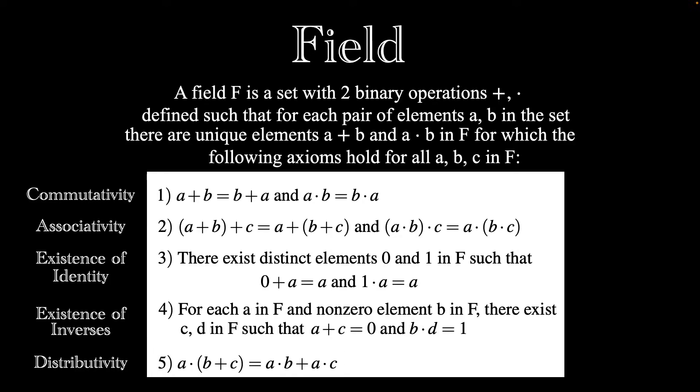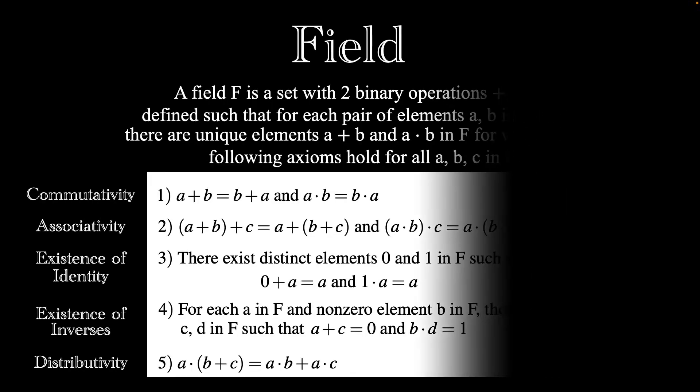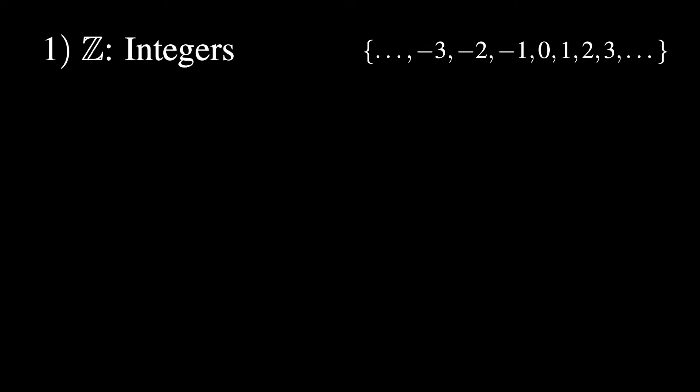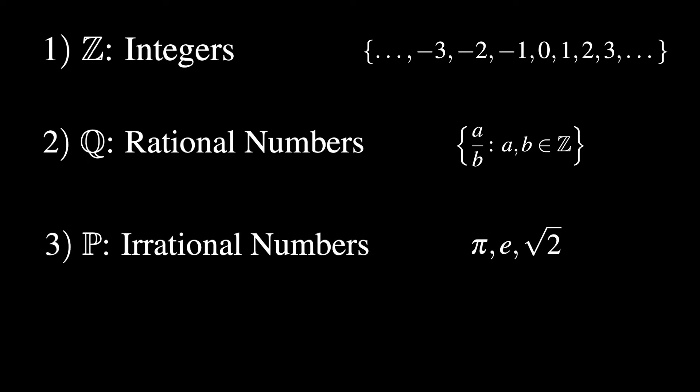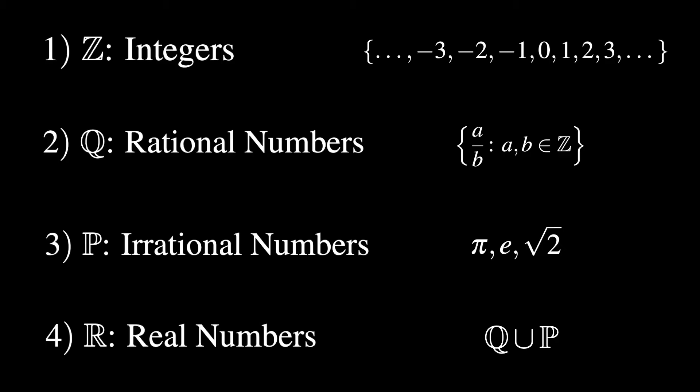These five axioms seem natural enough, and at first glance one might guess that any basic number system will satisfy them. However, this turns out to not be the case. Let's consider four of the most familiar number systems which most people encounter in high school mathematics. First, the integers — the set of whole numbers stretching from negative infinity to positive infinity. Second, the rational numbers — the set of all numbers that can be written as a ratio a over b, where a and b are both integers. Third, the irrational numbers — numbers that cannot be written as ratios, with common examples including pi, e, and the square root of 2. Finally, the real numbers, defined as the union of the set of rationals and the set of irrationals. So, which of these systems do you think are fields? Let's go through them one by one.